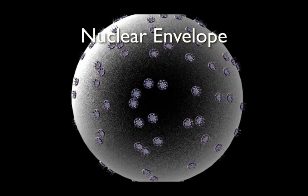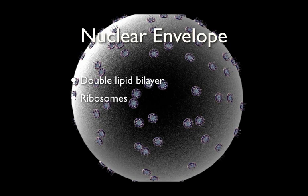The nuclear envelope protects and encloses the nucleus. It is made of a double lipid bilayer, consisting of an inner and outer membrane. The outer membrane has ribosomes scattered around its surface. There are also nuclear pores which penetrate the inner and outer membrane, allowing for the transport of materials, specifically mRNA, in and out of the nucleus.